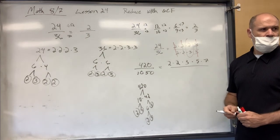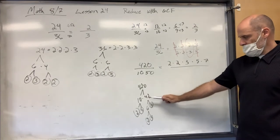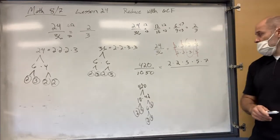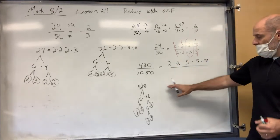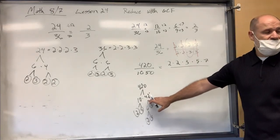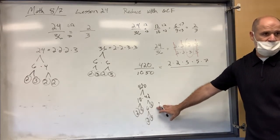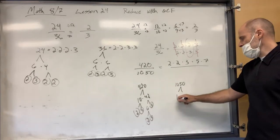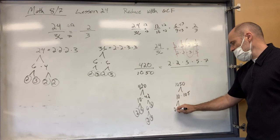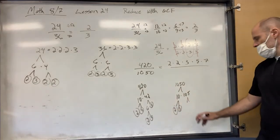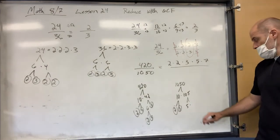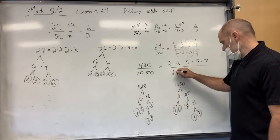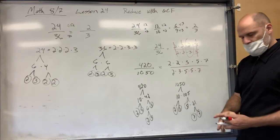You can split the top number any way you like — 2×210, 10×42 — you'll end up with the same prime numbers. For 1050: 10×105. 10 is 2×5. What goes into 105? 5 goes in 21 times. Five is prime. What goes into 21? Three and seven — both prime. So 1050 is 2×3×5×5×7.